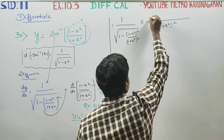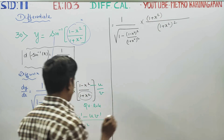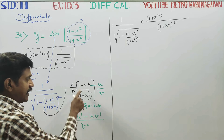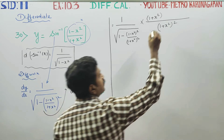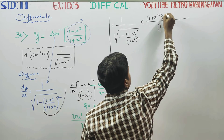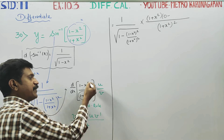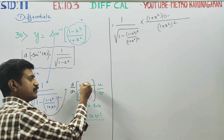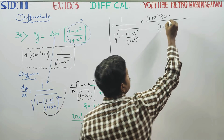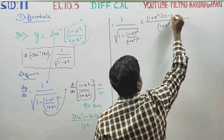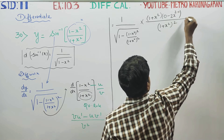We copy v, which is (1 plus x square). Then we find u dash — we differentiate u, which is (1 minus x square). Differentiating: 1 differentiates to 0, x square differentiates to 2x, giving us minus 2x.